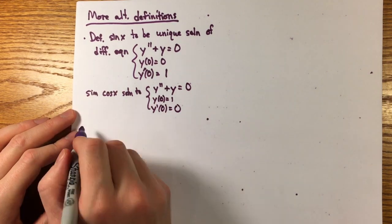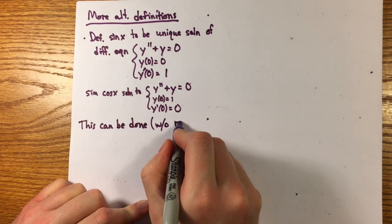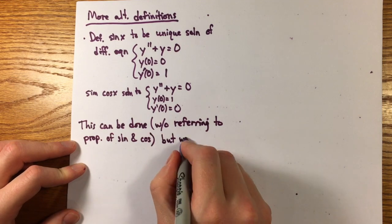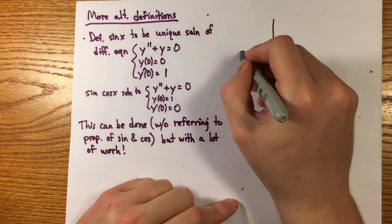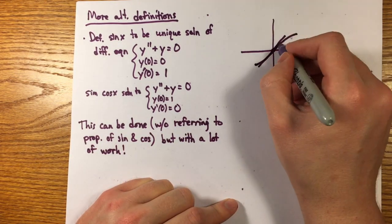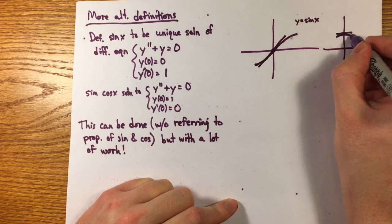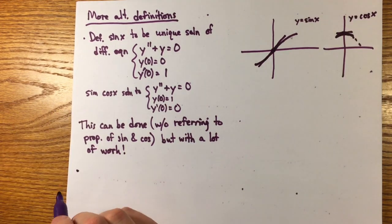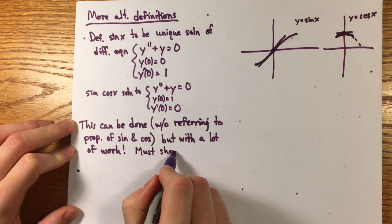Cosine having initial conditions y of 0 equals 1, y prime of 0 equals 0. It's possible to show that this equation admits two linearly independent solutions defined in all of r without reference to trig functions, though it requires considerably more machinery even than just the fundamental theorem of calculus.